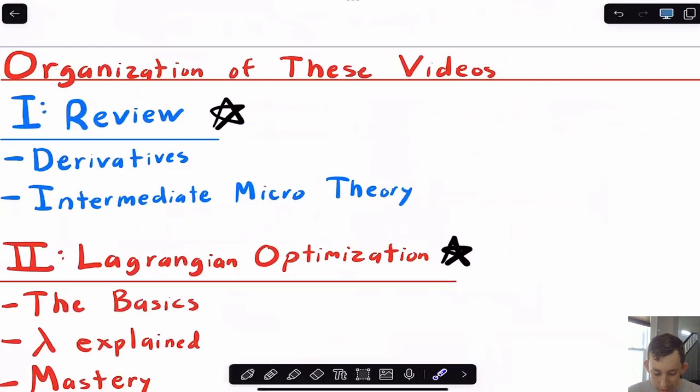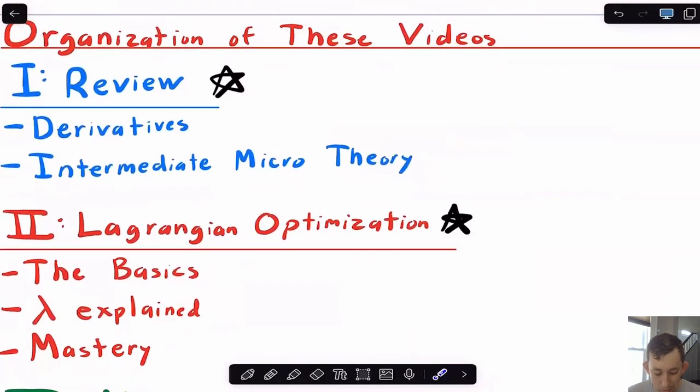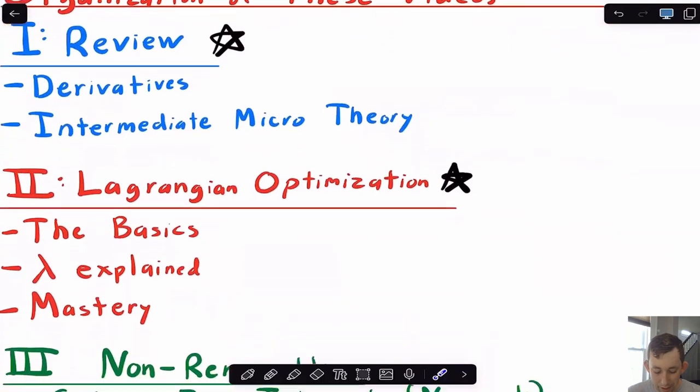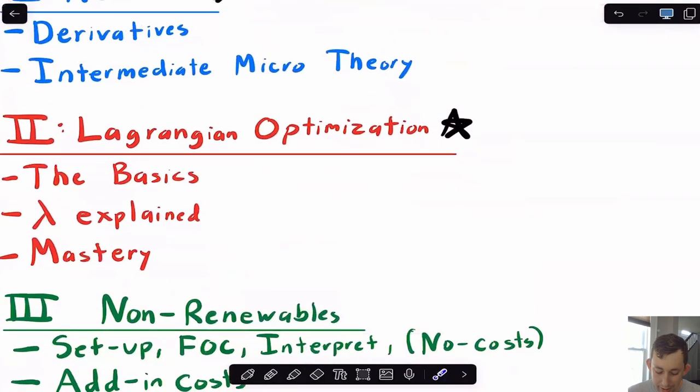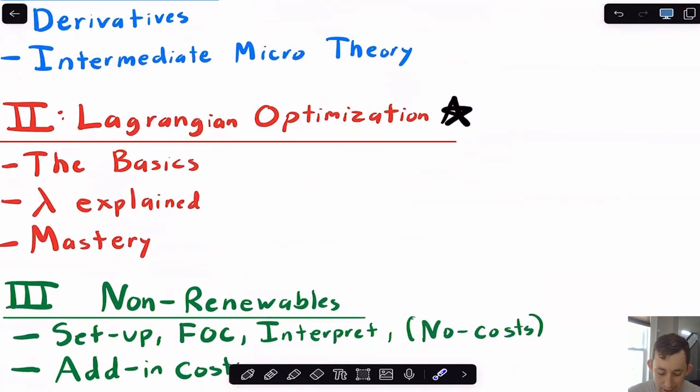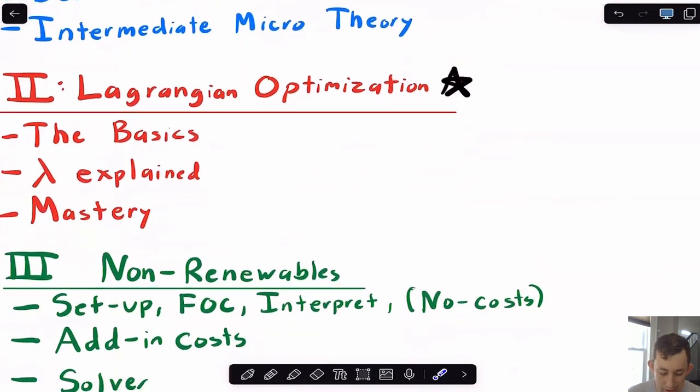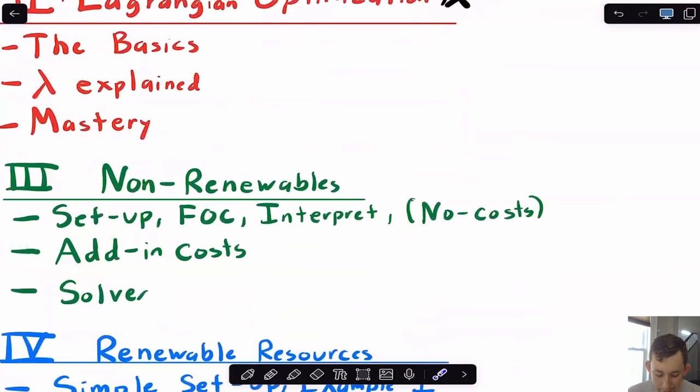And so just again, here's how these videos are going to be organized in terms of parts. And again, it'll be in order in this playlist. So first, I'm going to have you review both derivatives and things that you should learn from intermediate micro theory. And then I'm going to, again, talk about how Lagrangian optimization works. I'm going to do that in three parts just because it gets a little lengthy. But I think after you watch those three videos, you'll have a really good idea of how to use Lagrangian optimization.